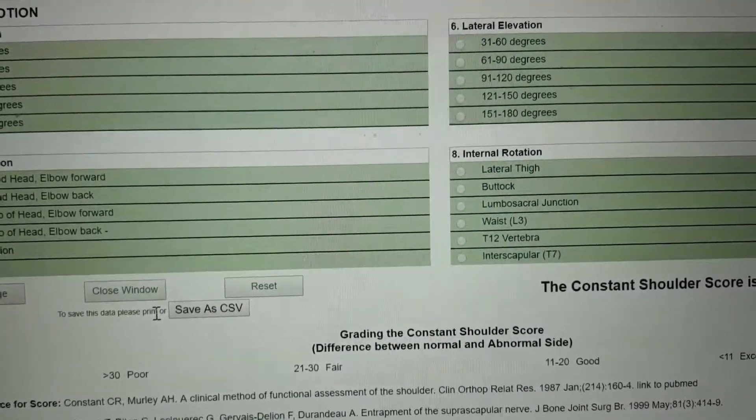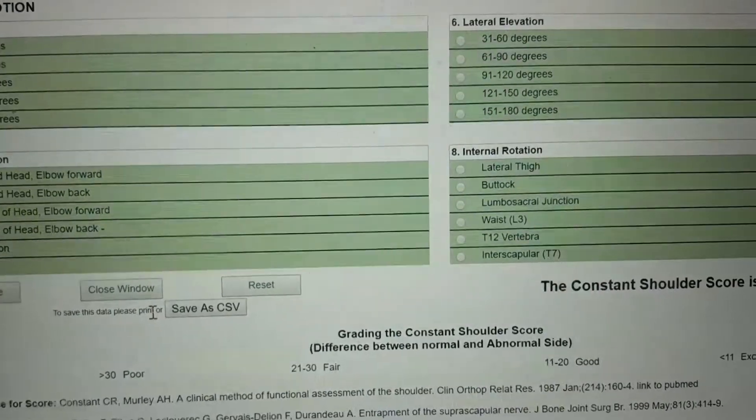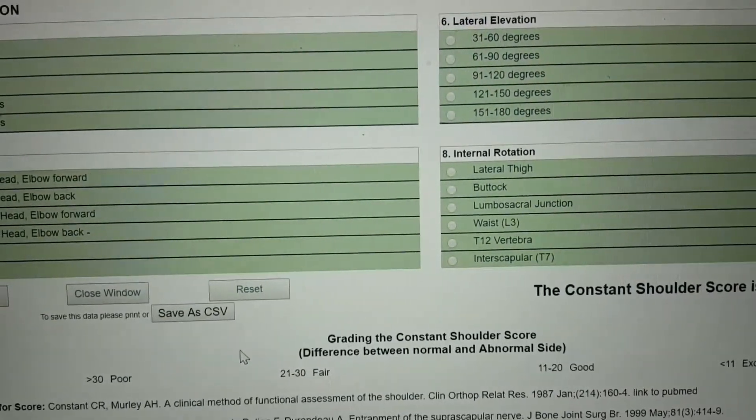A difference greater than 30 is considered poor, between 21 and 30 is fair, between 11 and 20 is good, and less than 11 is excellent.